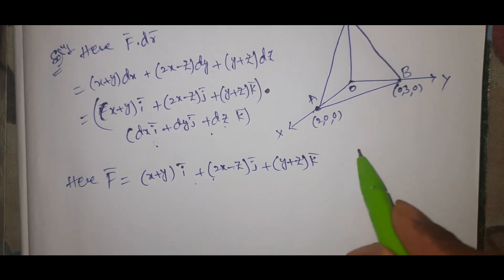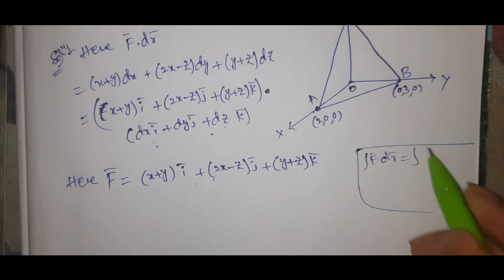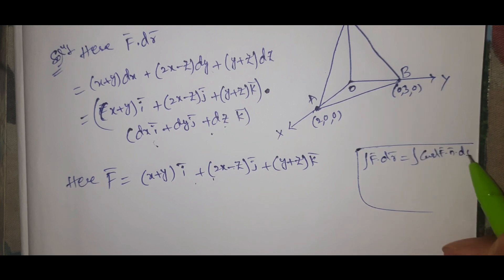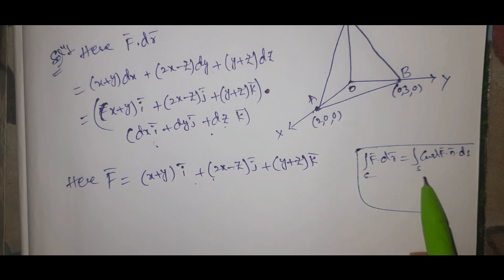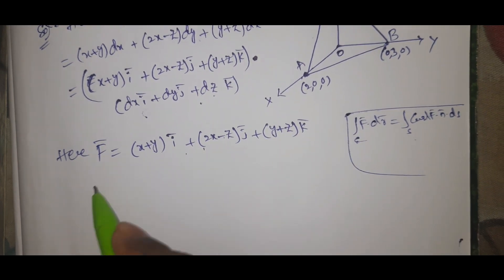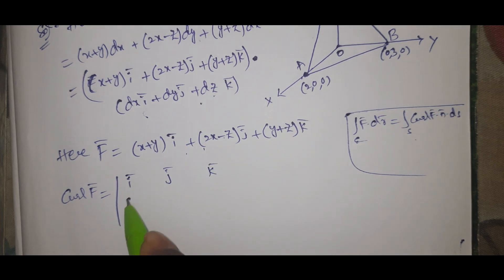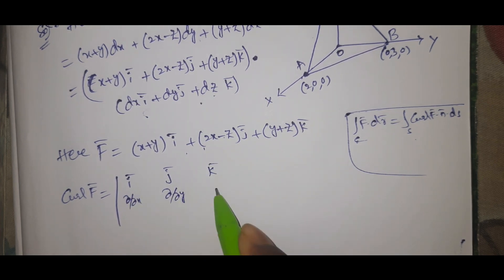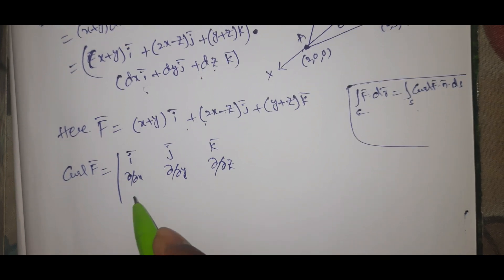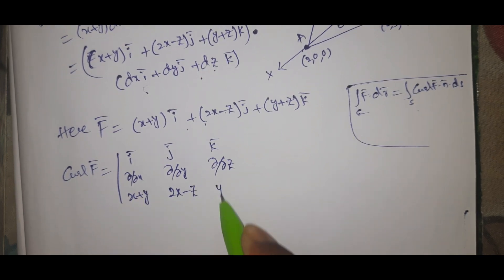By Stokes theorem, the line integral ∮_C F̄ · dr̄ equals the surface integral ∬_S (curl F̄) · n̄ dS — this is the transformation from line integral to surface integral. Now, curl F̄ equals the determinant with î, ĵ, k̂ in the first row; ∂/∂x, ∂/∂y, ∂/∂z in the second row; and (x + y), (2x − z), (y + z) in the third row.